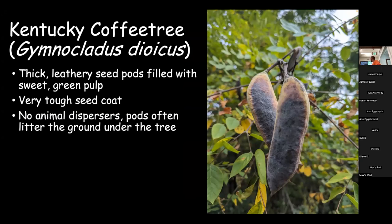Another native anachronism is the Kentucky coffee tree. It's got these thick leathery pods filled with a very sweet pulp and very hard, dense seeds that nothing really eats. If you see the coffee trees here or elsewhere, you'll see just the pods all over the ground because nothing's really going after them. This is also one found in floodplains a lot, even though it grows well in upland areas - but it doesn't disperse naturally in uplands anymore.